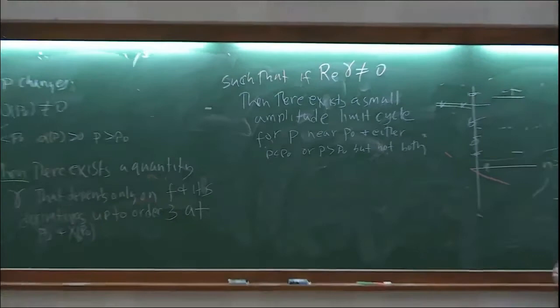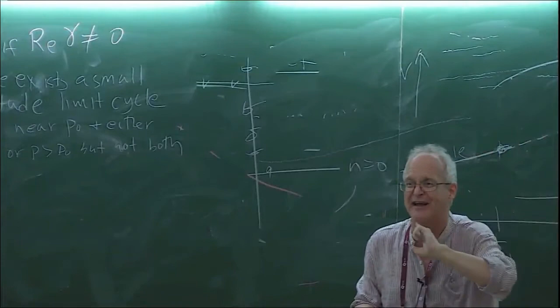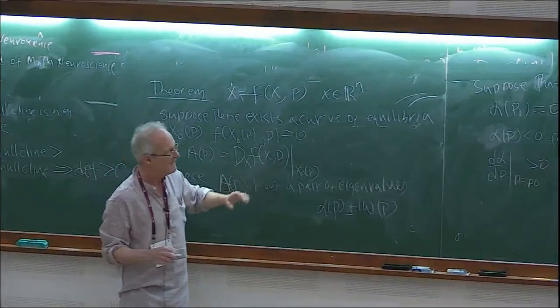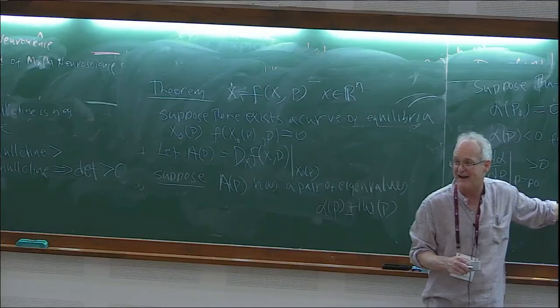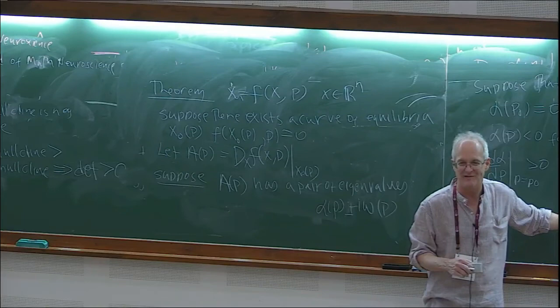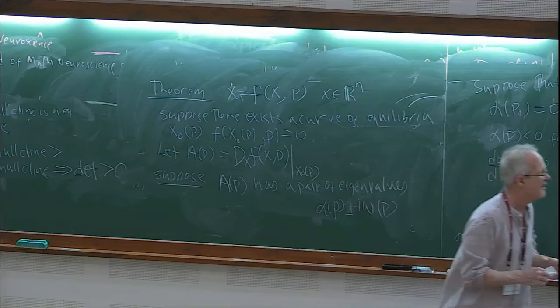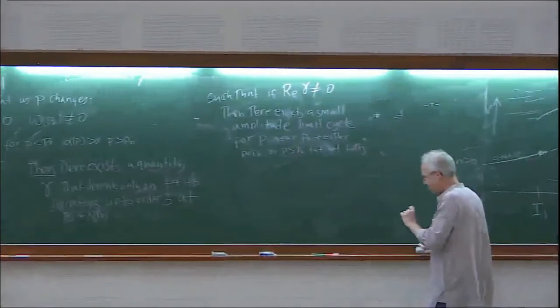Such that if Re(γ) is not zero, then there exists a small-amplitude limit cycle (periodic orbit) for p near p_0 — either for p less than p_0 or p greater than p_0, but not both. This is called the Hopf bifurcation theorem — also called the Andronov bifurcation, or more properly the Poincaré-Andronov-Hopf bifurcation.